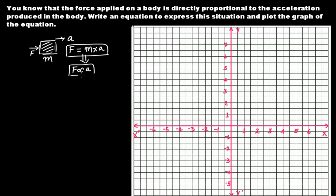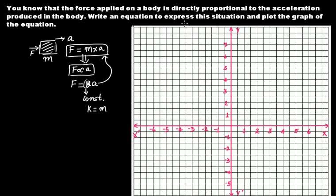From this equation we can say that F is directly proportional to acceleration. From the property of ratio and proportion, we can write F = ka, where k is a constant. If you relate F = ka to F = ma, then k is actually the mass of the body. So k equals the mass of the body.